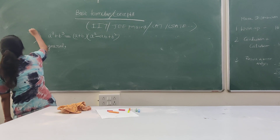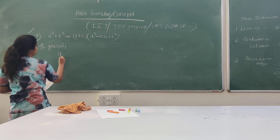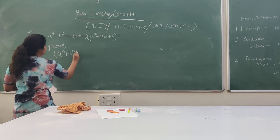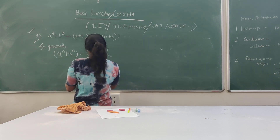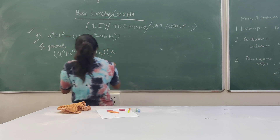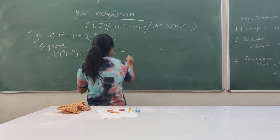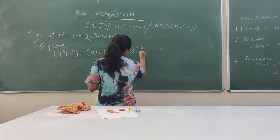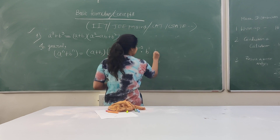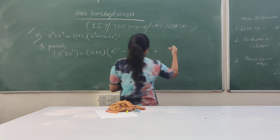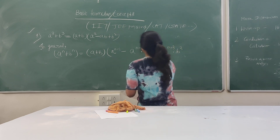So we are getting this one right. If we generalize this, what will happen is we can say that a to the power n plus b to the power n is equal to a plus b into a to the power n minus 1 into b to the power 0, minus a to the power n minus 2 into b to the power 1, then plus a to the power n minus 3 into b to the power 2.